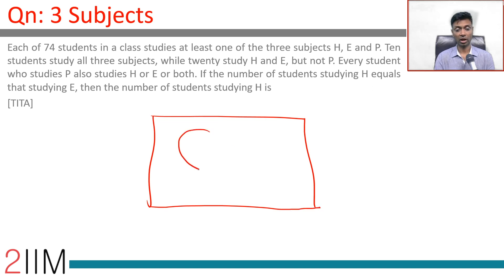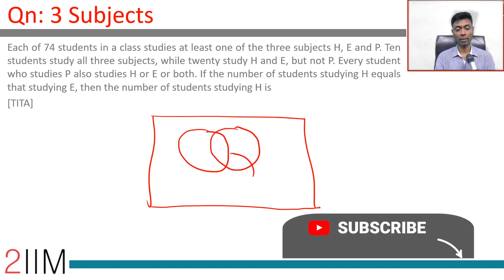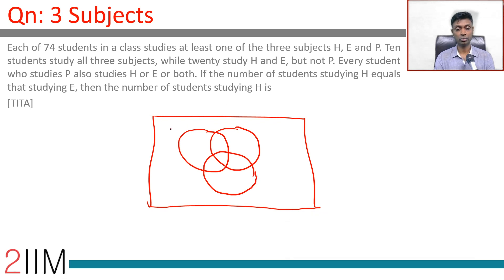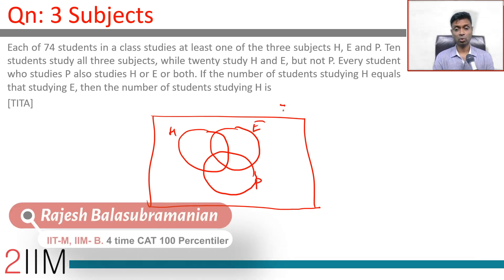So H, E, P. 74 in a class, all of them study at least one of the three. This is remaining 0.